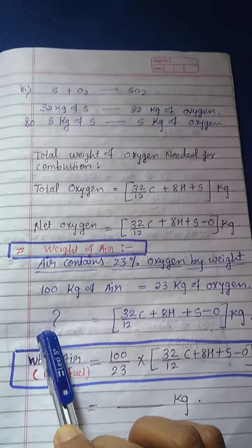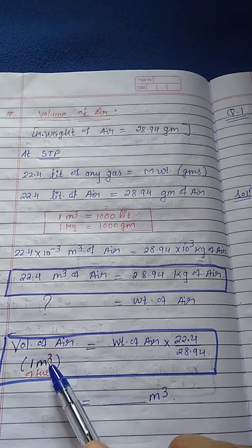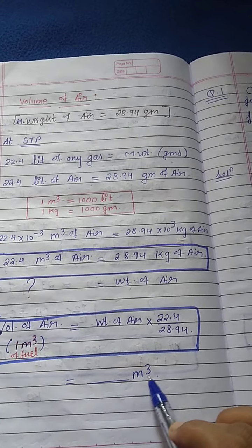We also convert grams to kilograms: 1 kg = 1000 g, so 1 g = 10⁻³ kg. Therefore 28.94 grams = 28.94 × 10⁻³ kg. The 10⁻³ factors cancel on both sides, giving us the key relation: 22.4 m³ of air = 28.94 kg of air. Using this relation between weight and volume of air, we can convert given weight of air into volume. The unit for volume of air is m³.